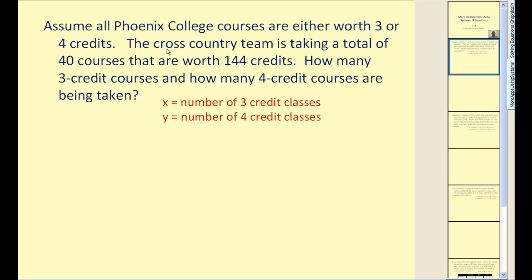The first thing we need to recognize here is that the team is taking a total of forty courses. Therefore our first equation would have to be x plus y must equal forty. Now the next equation is going to deal with the total number of credit hours. There's a total of 144 credit hours, but every x is worth three credits. So we'd have three times the number of three credit courses plus every y is worth four credits. So four credits times every four credit class must equal the total number of credit hours which is 144.